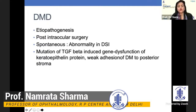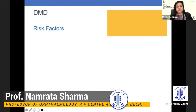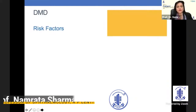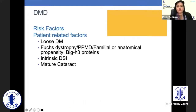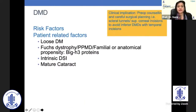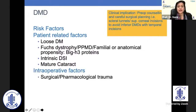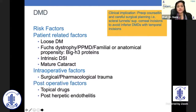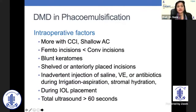If you see loose Descemet's membrane preoperatively, one should always counsel the patient about the same. It can also occur in Fuchs dystrophy and in mature cataracts. Intraoperative factors include surgical or pharmacological trauma, and postoperatively, it can be because of topical drugs as well.